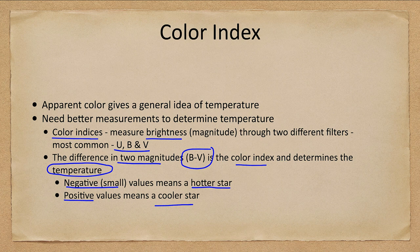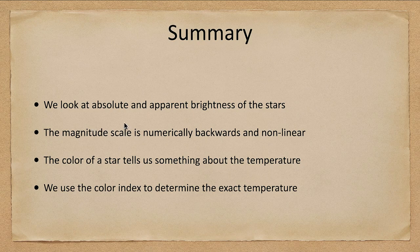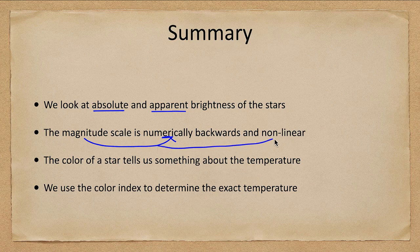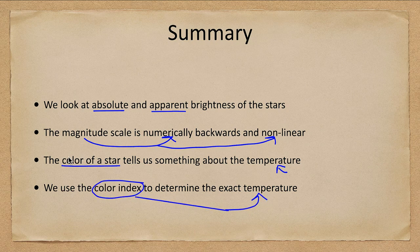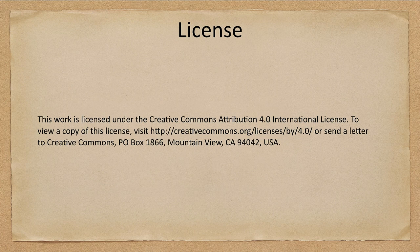In summary, we looked at the absolute and apparent brightnesses of stars, discussed the magnitude scale and how it is numerically backward and nonlinear, making it a little more difficult to deal with than other scales. The color of a star tells us about its temperature, and we can use things like the color index to determine the temperature of a star quantitatively. That concludes this lecture on brightness and colors of stars — we'll be back again next time for another topic in astronomy, so until then, have a great day everyone.